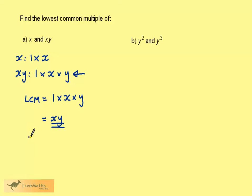This is a similar situation to 4 and 2. The lowest common multiple for 4 and 2 is 4. Remember 4 is equal to 2 times 2. So the lowest common multiple of 4 and 2 is just 4, and the lowest common multiple of x and xy is xy. It's a similar situation.